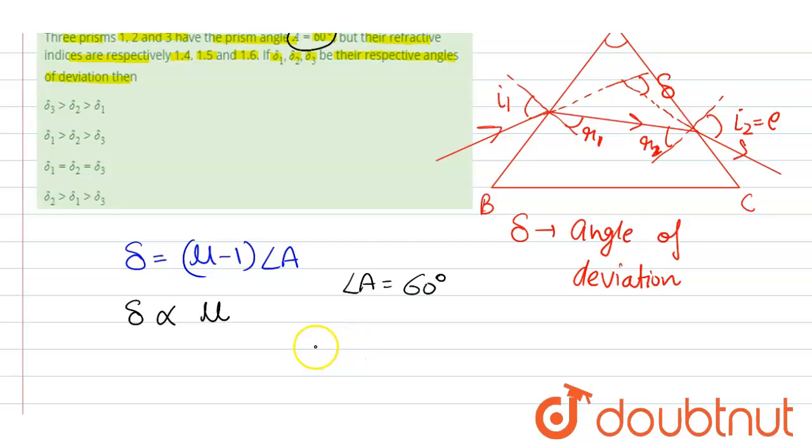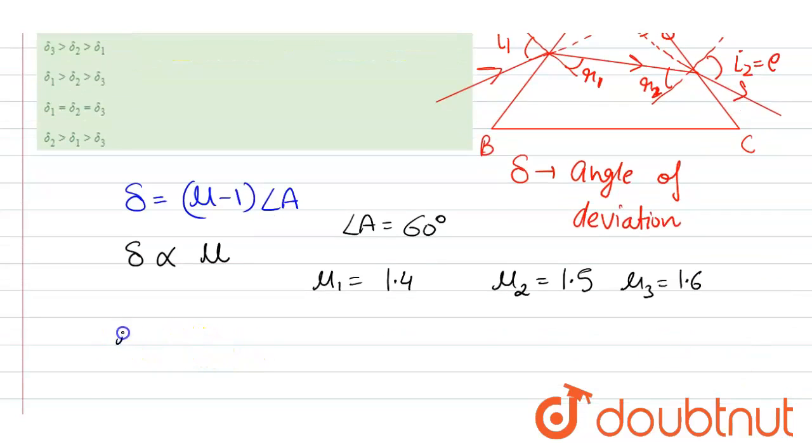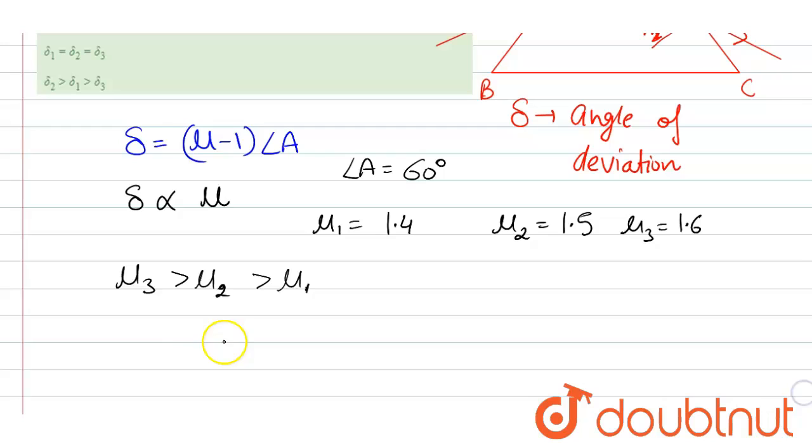And according to the question mu1 is given here 1.4, mu2 is given here 1.5 and mu3 is given here 1.6 which clearly indicates that mu3 is greater than mu2 is greater than mu1 which suggests that since it is directly proportional, it means that del3 is greater than del2 is greater than del1.